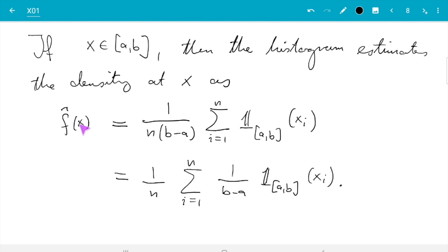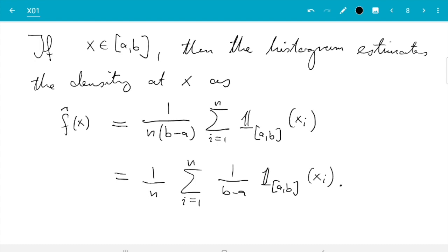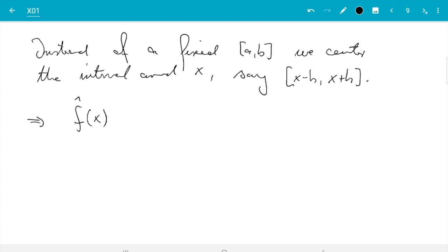That is the first change which is made for kernel density estimation compared to histograms. Buckets are no longer fixed, but instead to make sure that we always have a bucket which contains x, we just center them around x. So what I do here now is, instead of a fixed interval [a, b], we center the interval around x. Say we use the interval x minus h up to x plus h. Then we can still choose h for the width, but x is now right in the middle.